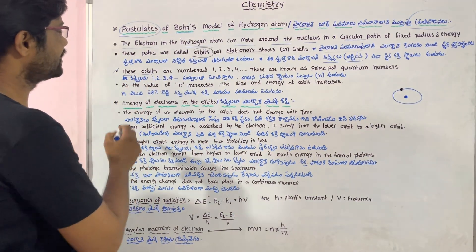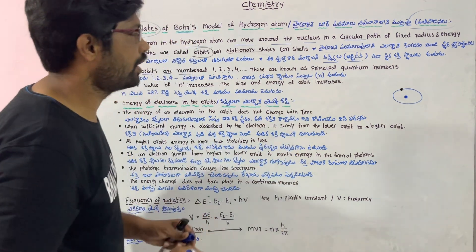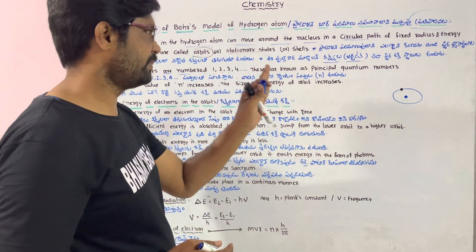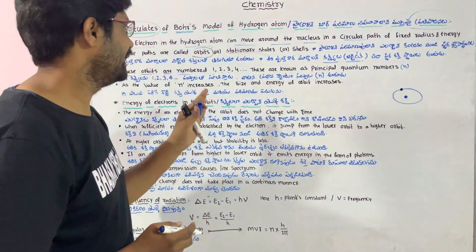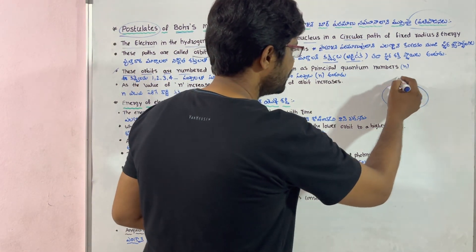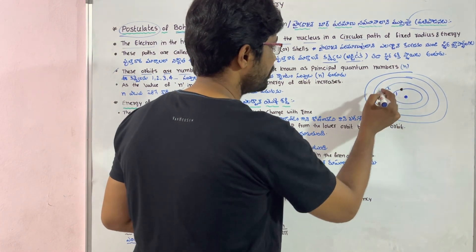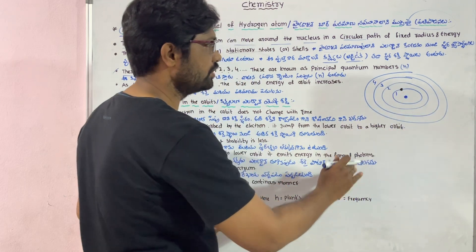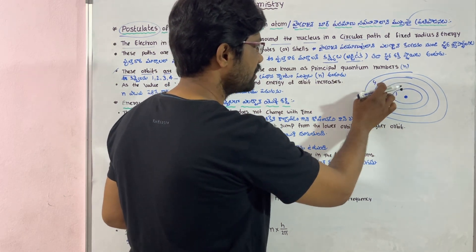These orbits are numbered 1, 2, 3, 4 and are known as principal quantum numbers. Looking at the model, the first orbit is closest to the nucleus, then the second orbit, third orbit, and fourth orbit going outward.